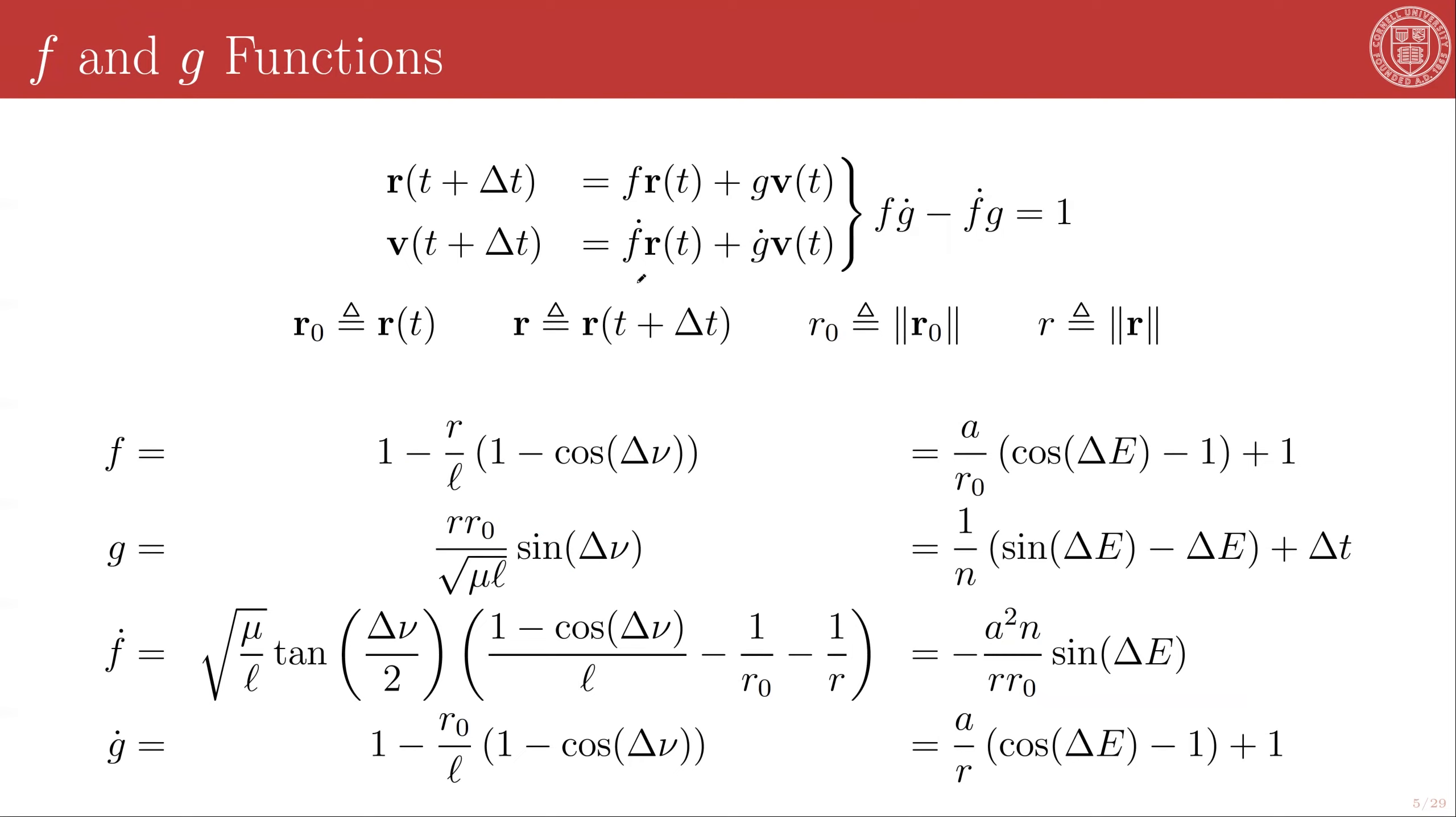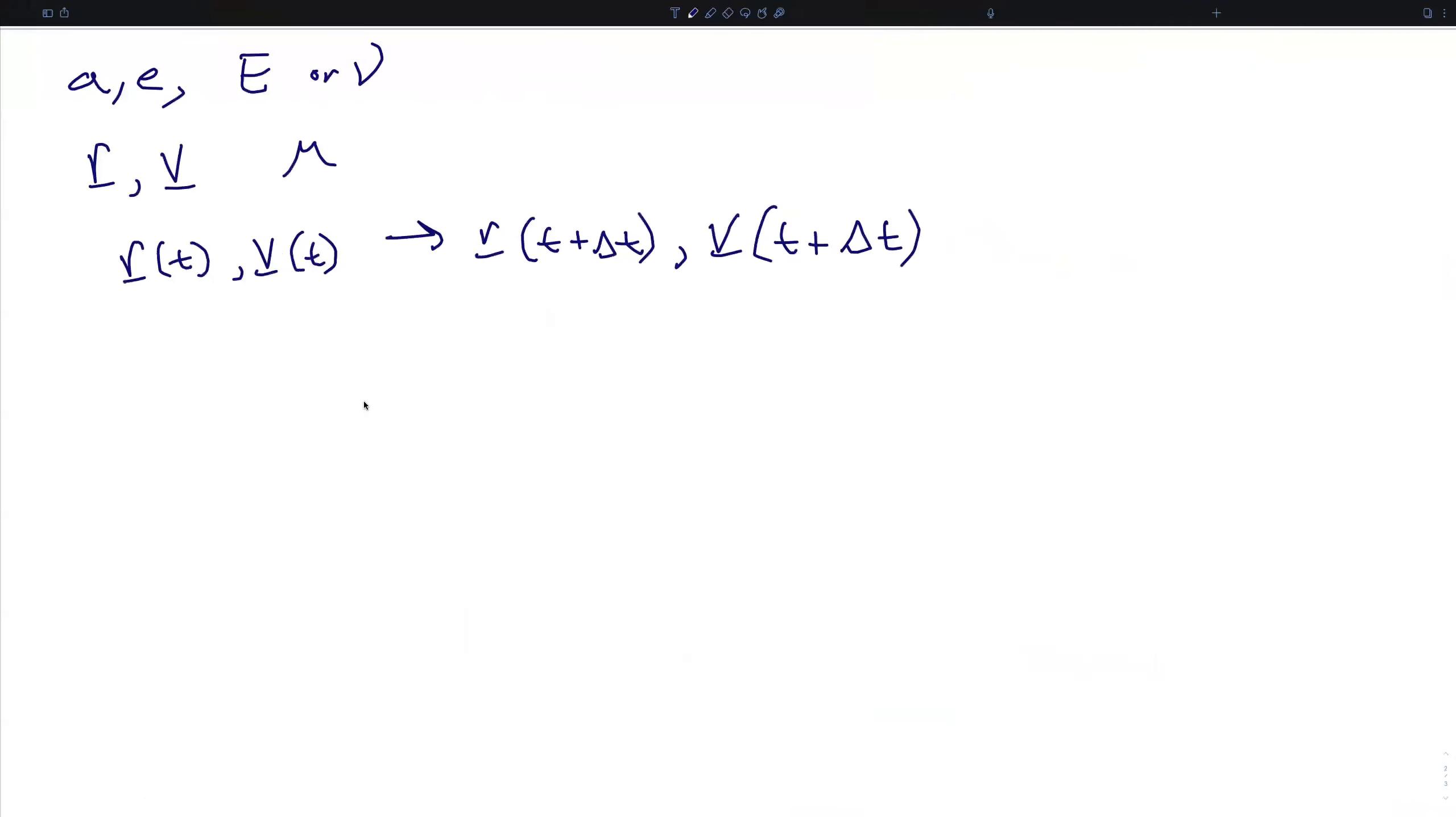Without having a specific form for any of these, we can already find one basic result that these are not independent quantities. The easiest way to see where this comes from is to remember that angular momentum is fully conserved. And so, since the angular momentum or specific angular momentum is a constant for all time, it's going to be equal to R of t cross V of t,